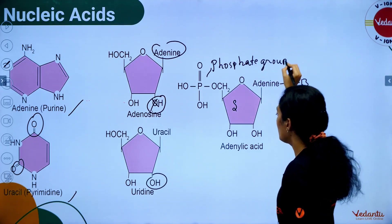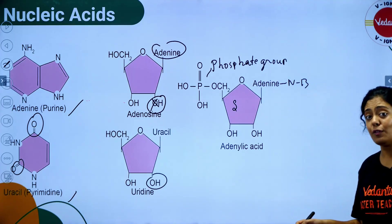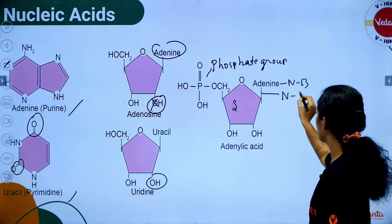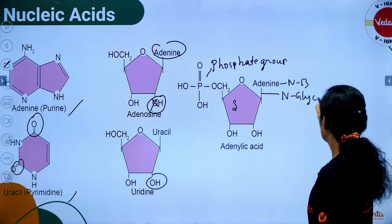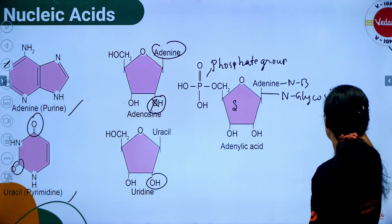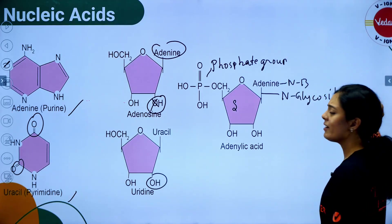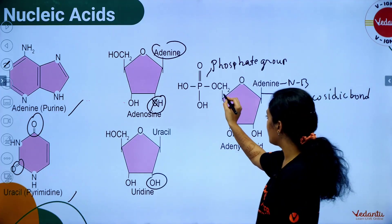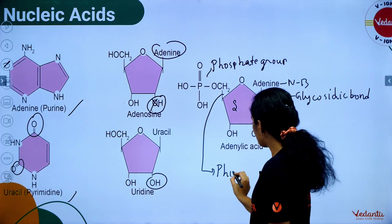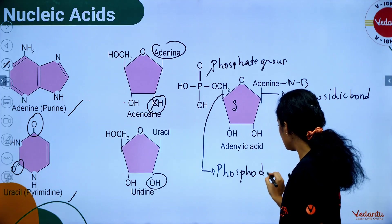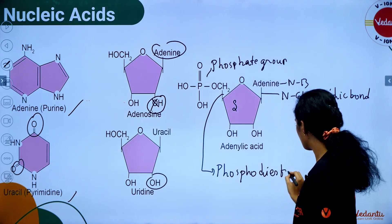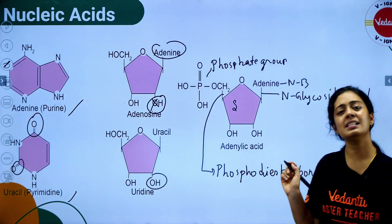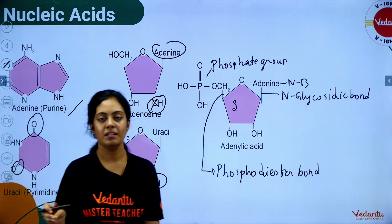In a nucleotide: this is your sugar, this is your nitrogenous base, and this is your phosphate group — specifically a hydroxyl phosphate group. The bond between the sugar and the base is called the glycosidic bond. The bond between the sugar and phosphate is called the phosphodiester bond.